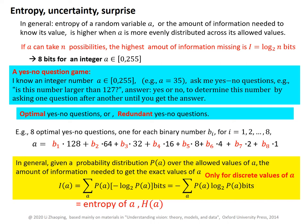So here is an optimal set of 8 questions. Each question gives you a binary digit. For example, you can ask: is this number larger than 127? If the answer is yes, then b1 is equal to 1; otherwise, the value of b1 is 0. Similarly, you can ask the next question to get the value of b2, and so on.